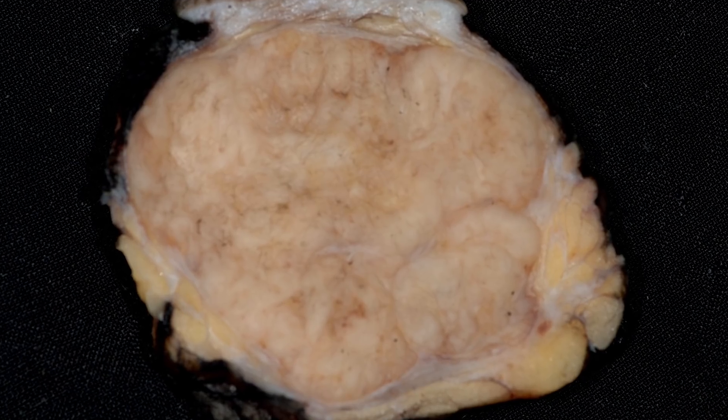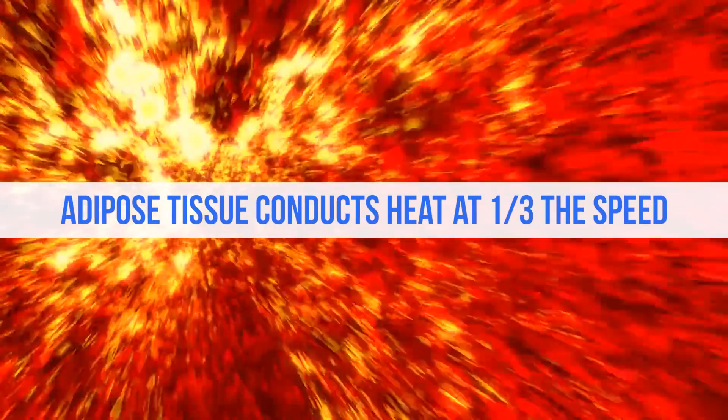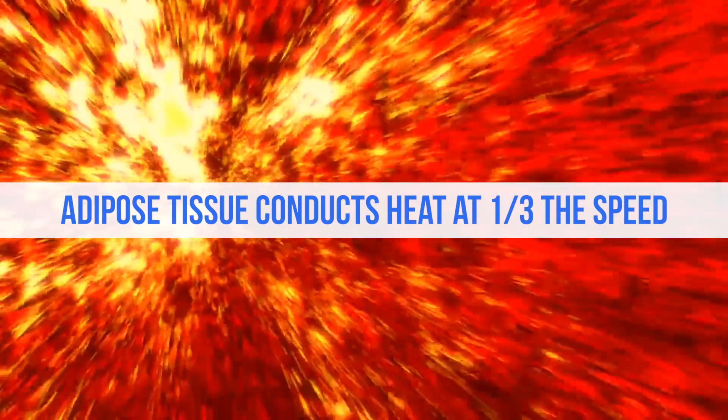Now when we look at sub-Q versus visceral, sub-Q's main job is just energy storage and cushioning. It doesn't conduct heat very well — that's all there is to it. Whereas most of our organs conduct heat at a certain rate of speed, adipose tissue conducts heat at about one-third the rate of the rest of the body, which means you have an insulating layer. It's just like putting insulation in your attic to keep the heat out — heat doesn't transmit through that insulation nearly as much.